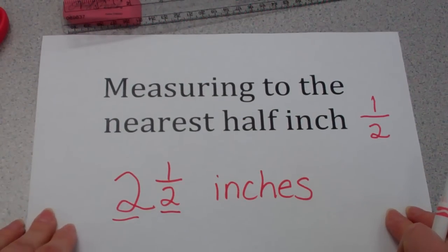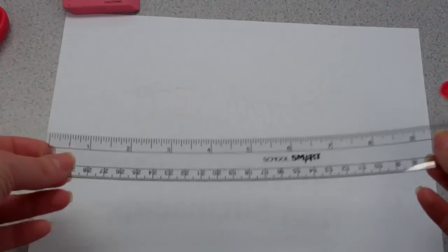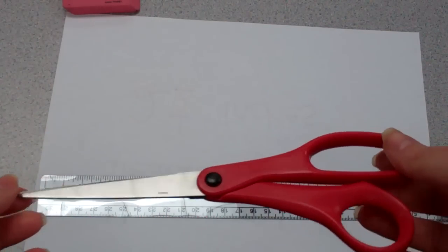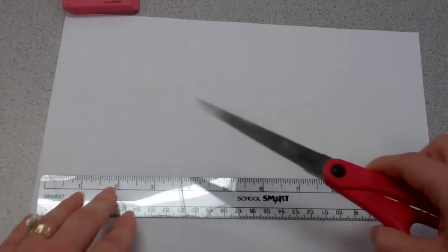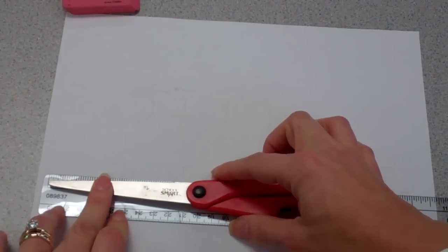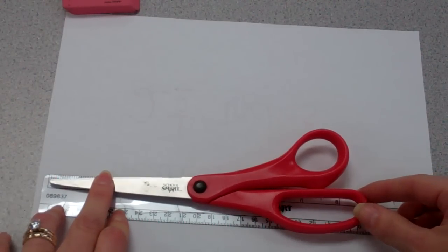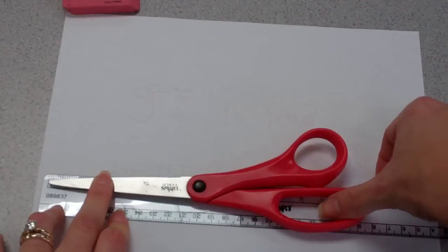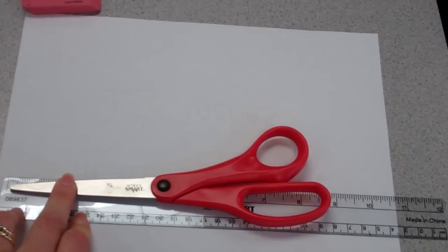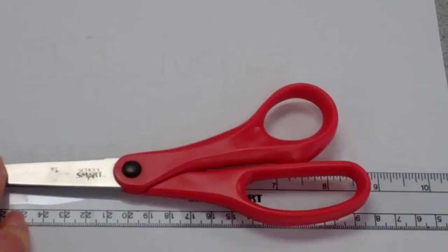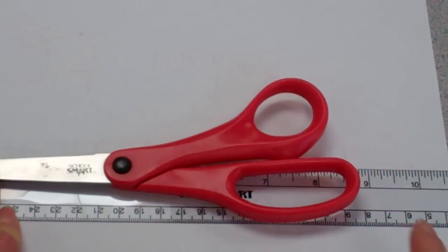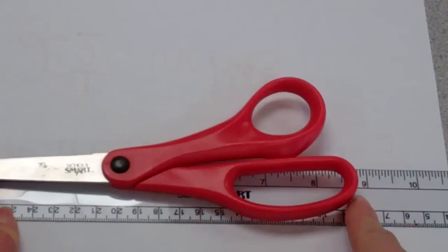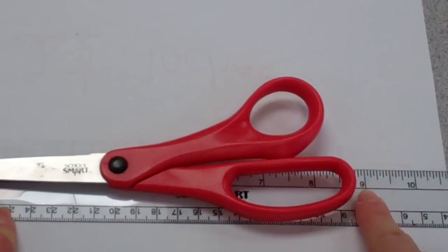Let's try measuring to the nearest half inch again. This time, instead of measuring an eraser, we're going to measure the length of this big pair of teacher scissors. I'm going to start off by lining the point of my scissors with the first hash mark on my ruler. Then I'm going to zoom in so that you guys can see that the handle of my scissors ends awfully close to the nine inch mark.